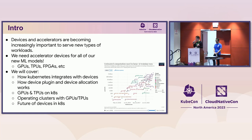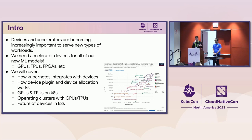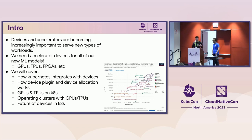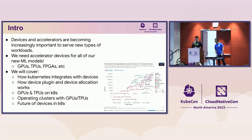These kinds of devices and accelerators have been quite a hot topic at this conference, and they're becoming increasingly important for complex workloads like machine learning training and inference. The demand has been growing, so it's even more important to access GPUs, TPUs, and FPGAs in our Kubernetes clusters. Today we'll cover how Kubernetes integrates with these devices through device plug-ins, usage examples, operational tips, and a brief outlook on the future of devices in Kubernetes.